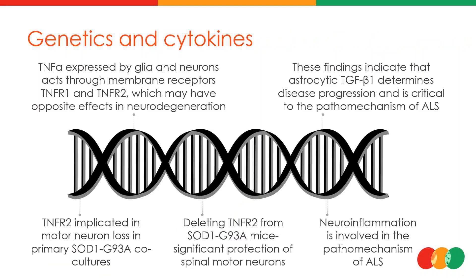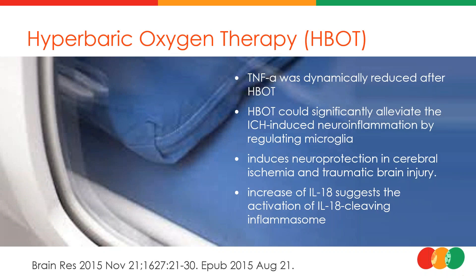There is remarkable genetics research underway. TNF-alpha is expressed by glial cells and neurons. Besides SOD1 and its various alleles, other relevant genes include TNF-R1 and TNF-R2. TNF-alpha is dynamically reduced after hyperbaric oxygen therapy. Remember, during normal breathing we take in about 20% oxygen, whereas hyperbaric therapy delivers close to 100% oxygen, which increases interleukin-18, suggesting reduction of inflammation.